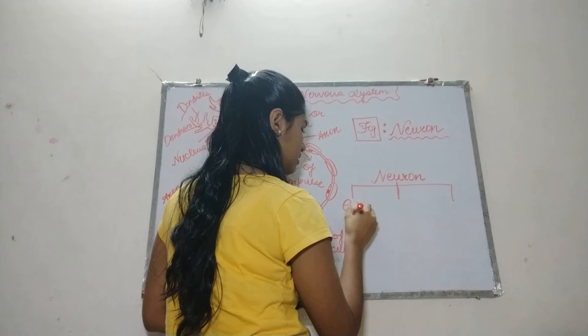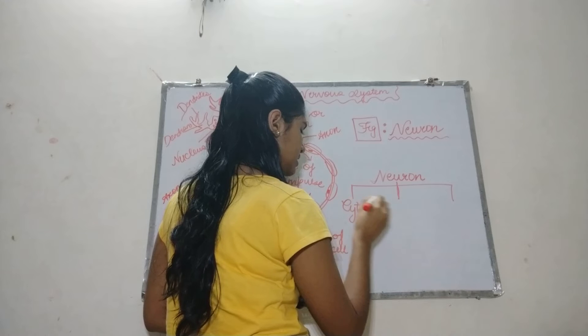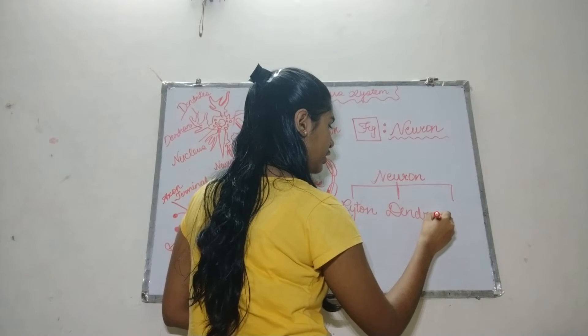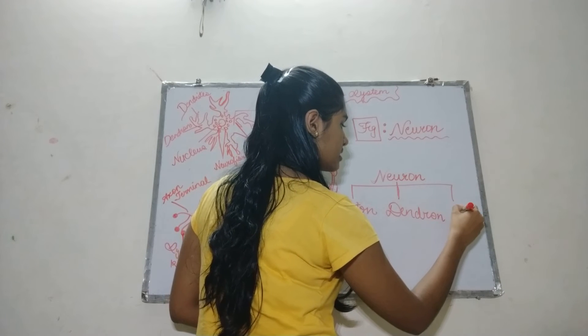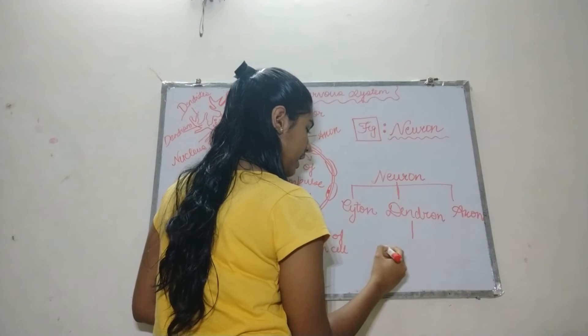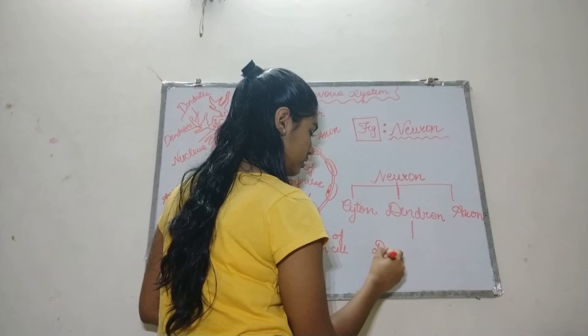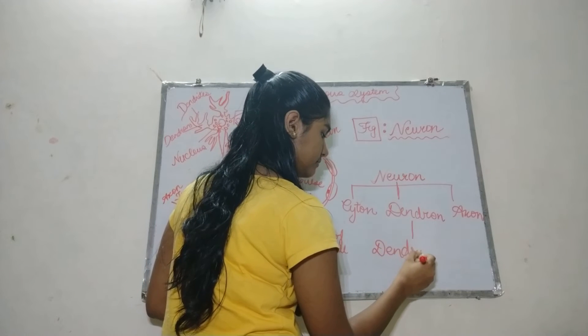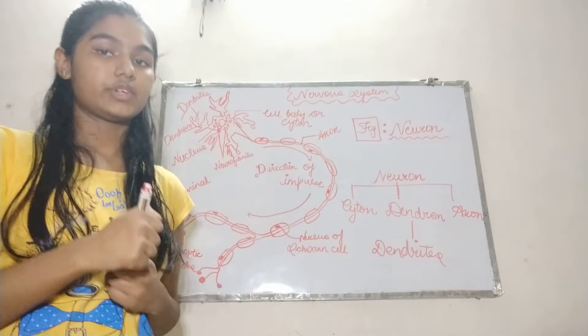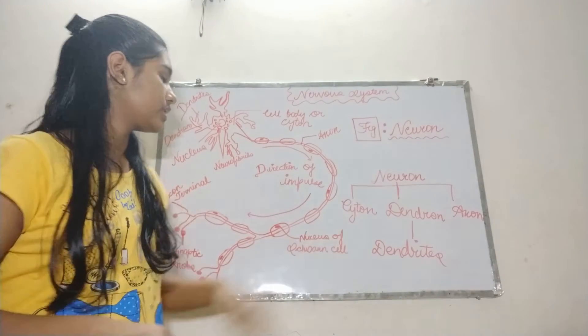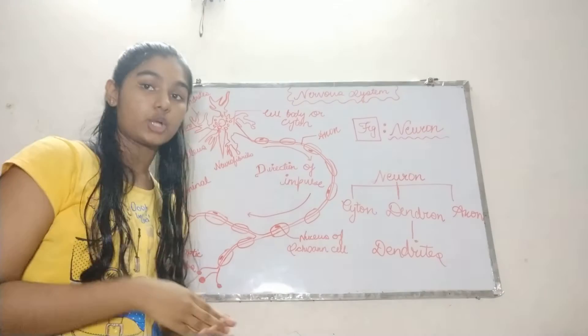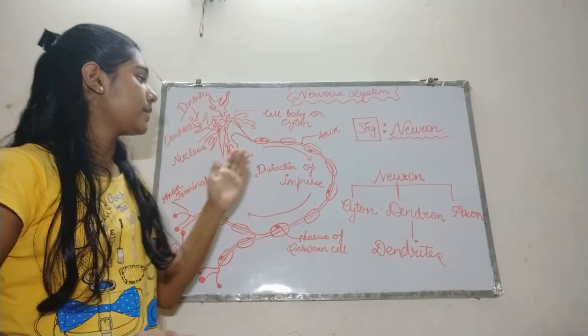First one is cytone. Second one is dendron, and the third is axon. From the dendron, fibers arise which are called dendrites. We will discuss about it one by one. What is cytone? This is our cytone. It is also called perikaryon. It is the cell body part of our neuron.